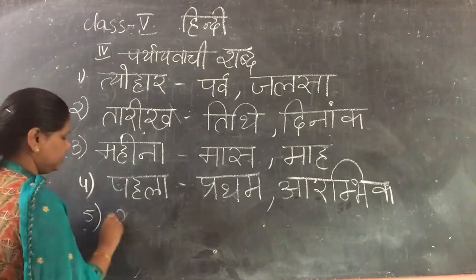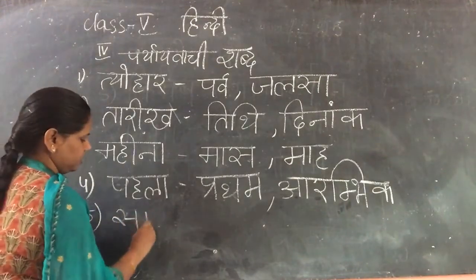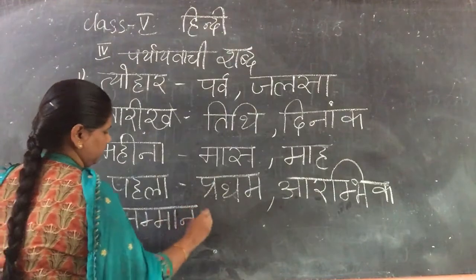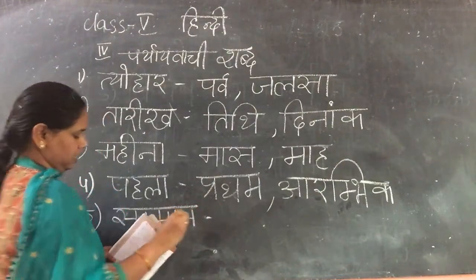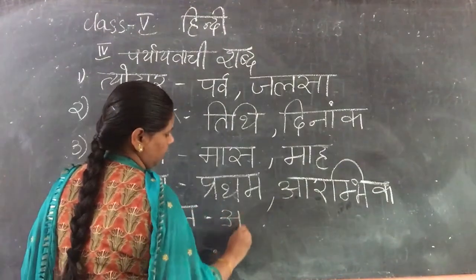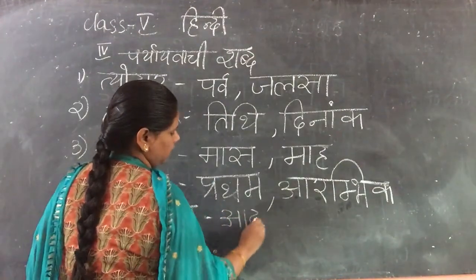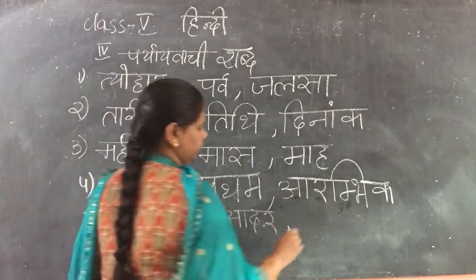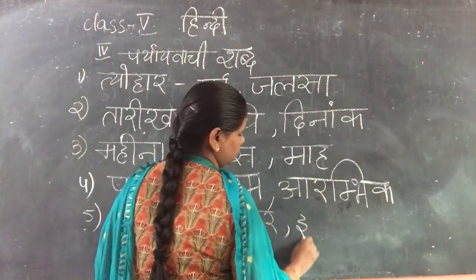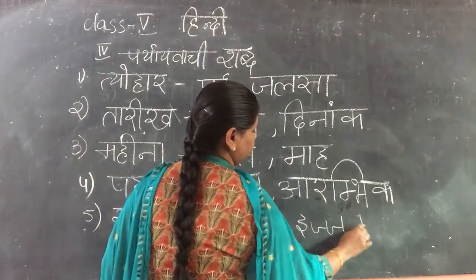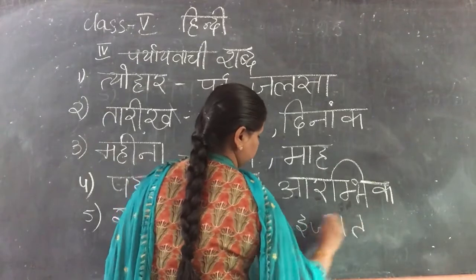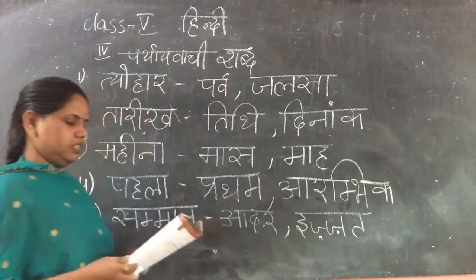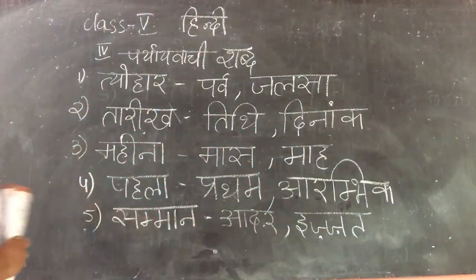Samman means Respect. It can also be written as Aadha — Iza. Iza also means Respect. Next comes.